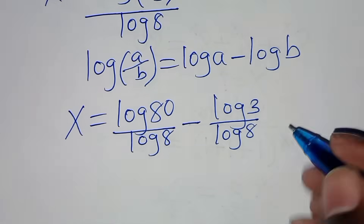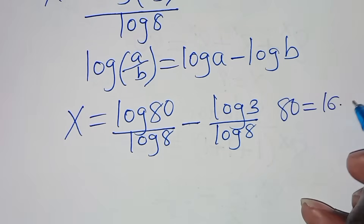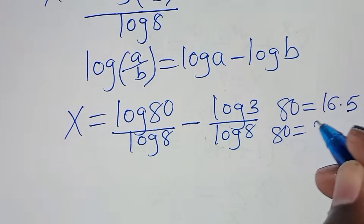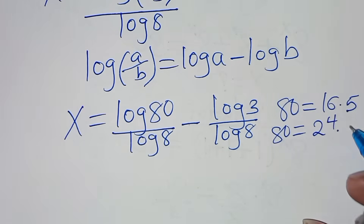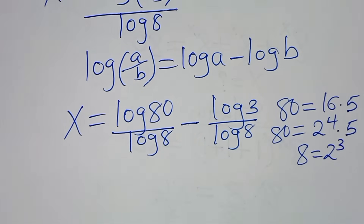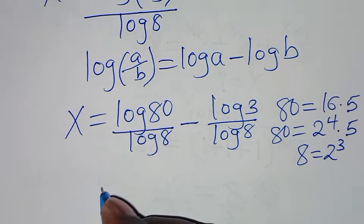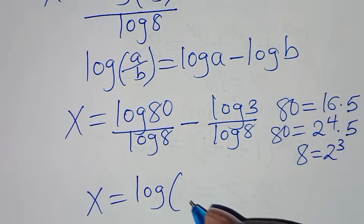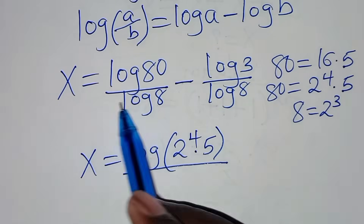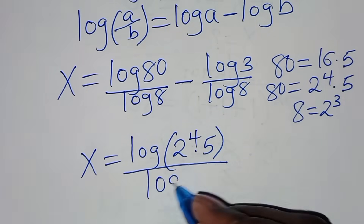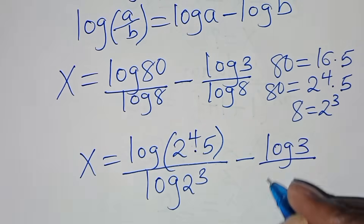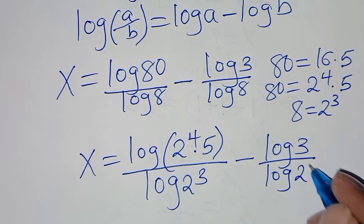The next step: we can express 80 as 16 times 5, which is 2 to the power 4 times 5. We can also express 8 as 2 to the power 3. Substituting this, x is equal to log(2^4 × 5) divided by log(2^3), subtract log(3) divided by log(2^3).